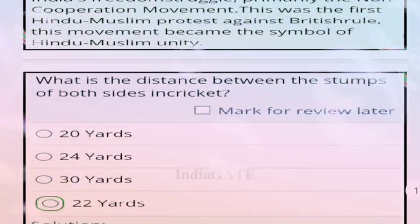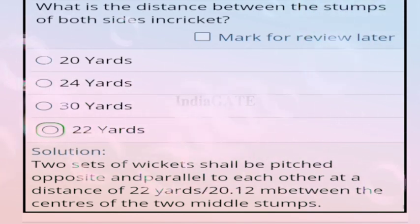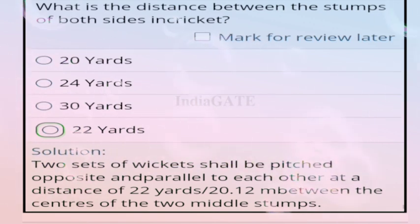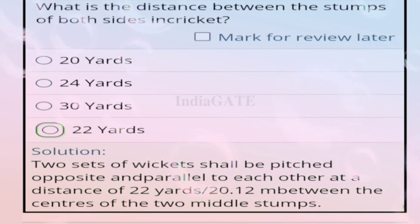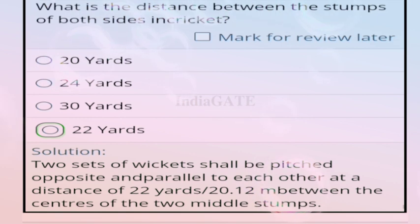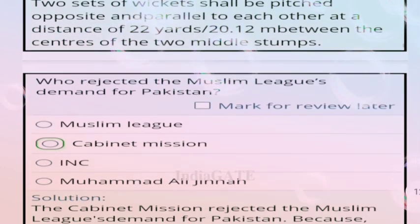Question 91: what is the distance between the stumps on both sides in cricket? Correct answer is 22 yards. The two sets of wickets are pitched opposite and parallel to each other at a distance of 22 yards (20.12 meters) between the centers of the two middle stumps.